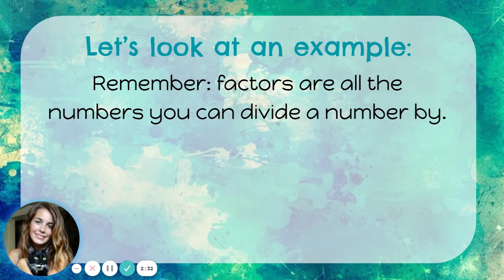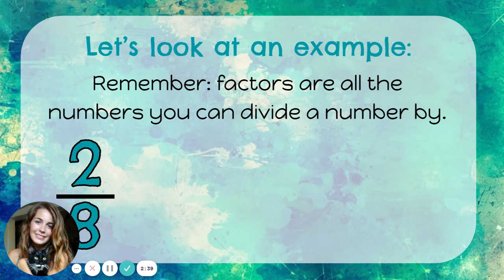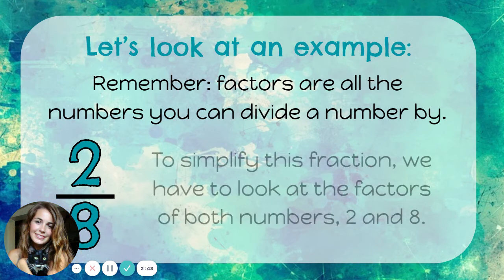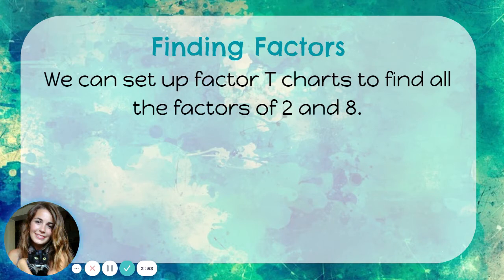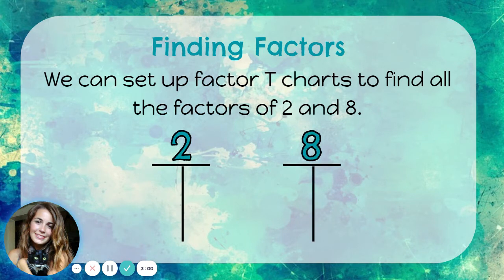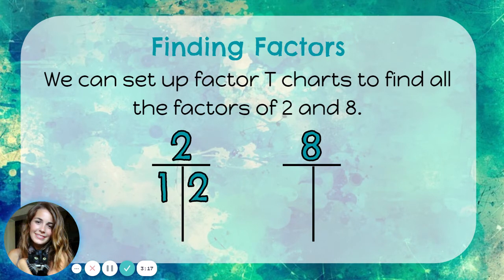Let's look at an example. Remember, factors are all the numbers you can divide a number by. So let's think about writing two-eighths in simplest form. To simplify this fraction, we have to look at the factors of both numbers, two and eight. We can set up factor T-charts to find all the factors of two and eight. When finding factors, I'm thinking about which numbers I can multiply together to get two and which numbers I can multiply together to get eight. Let's start with two. I know that one times two is two, so one and two are both factors of two — actually, they're the only factors of two.